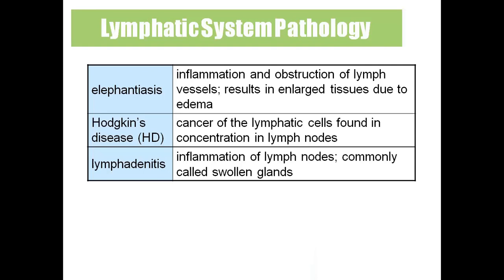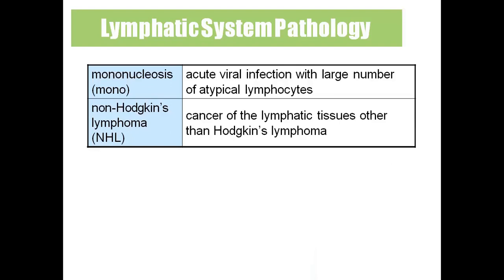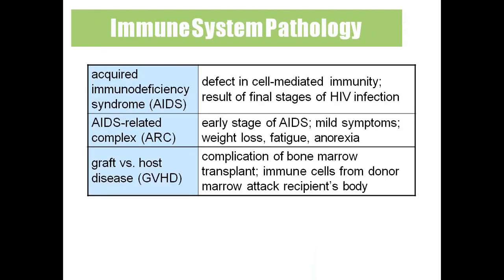Lymphadenitis — inflammation of lymph nodes, also called swollen glands. Mononucleosis — a viral infection that affects lymphocytes. Non-Hodgkin's lymphoma — different from Hodgkin's lymphoma; it is cancer of the lymphatic tissue. AIDS — acquired immunodeficiency syndrome — mainly affects cell-mediated immunity, specifically attacking T lymphocytes, and is caused by the virus HIV.